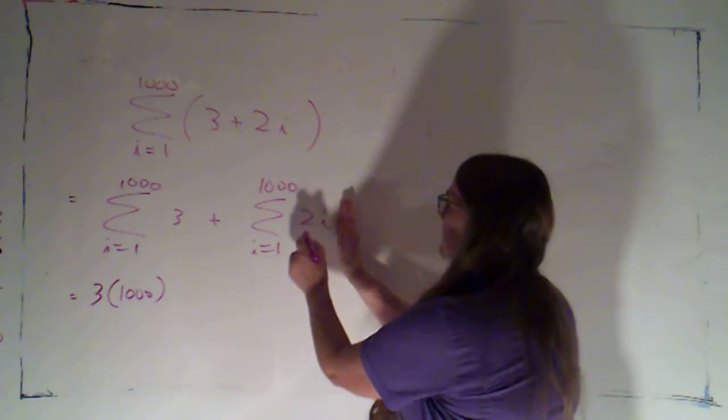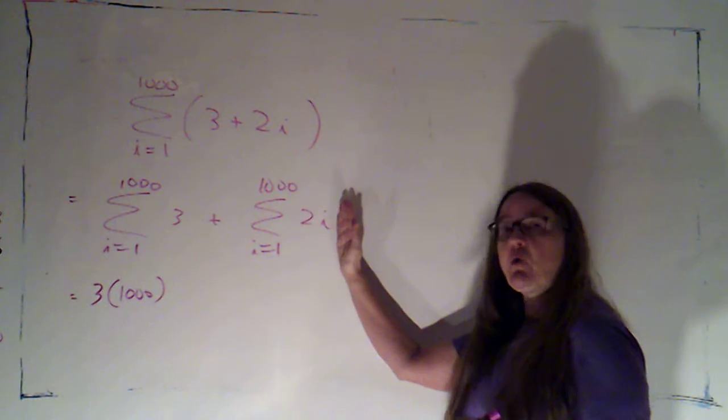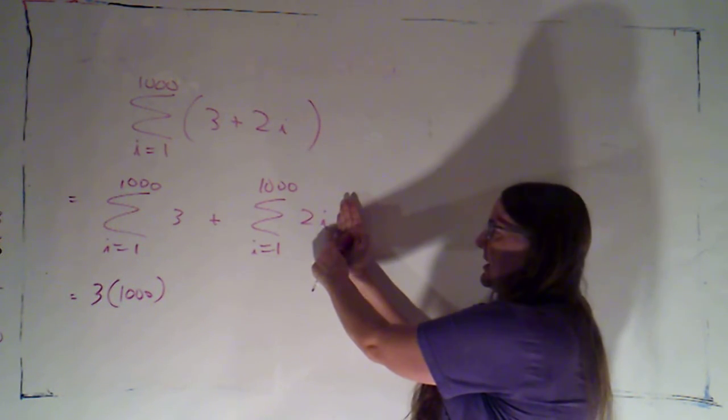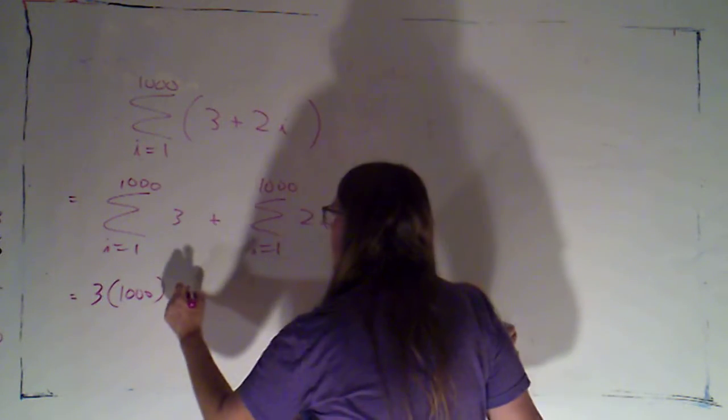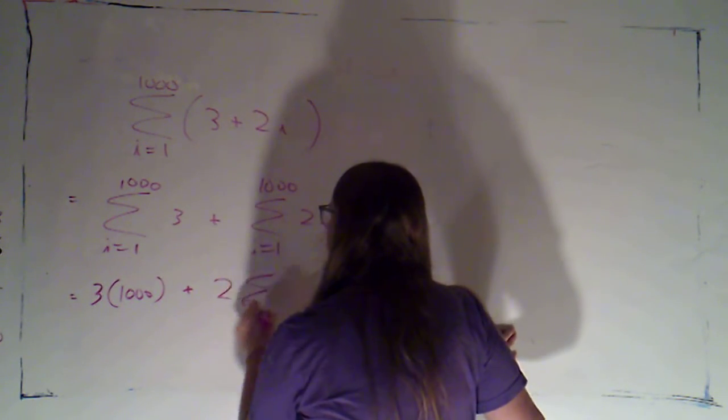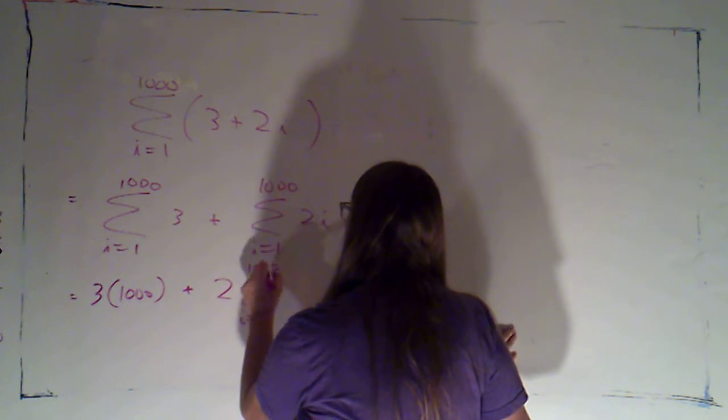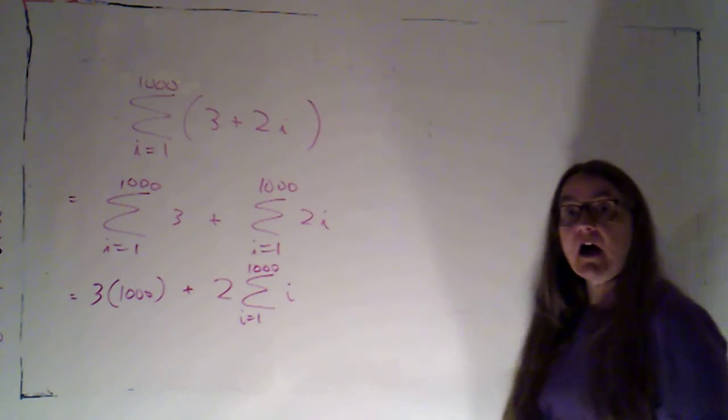Now here, what I'm adding up is two i. Notice that's a constant times i. I'm going to use my constant multiple rule to say I can factor out that two, and then this is the sum as i goes from one to a thousand of i.